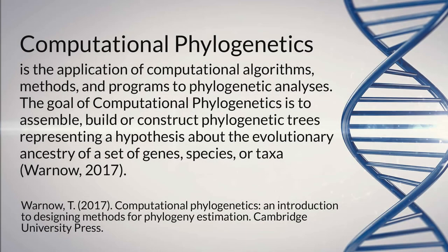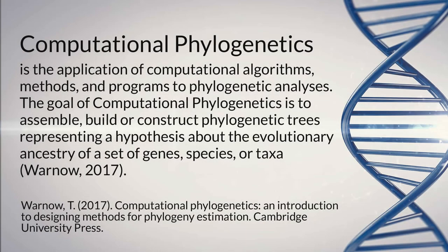Before addressing how computational phylogenetics can be used in plant conservation, we should first begin by properly defining computational phylogenetics as a field of study. We'll go with the most basic definition. Computational phylogenetics is the application of computational algorithms, methods, and programs to phylogenetic analysis. The goal of computational phylogenetics is to assemble, build, or construct phylogenetic trees representing a hypothesis about the evolutionary ancestry of a set of genes, species, or taxa.